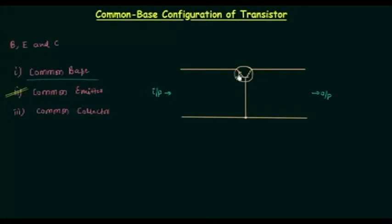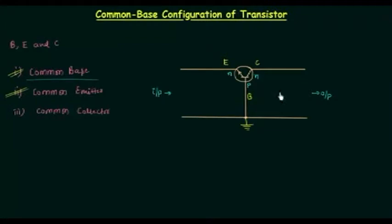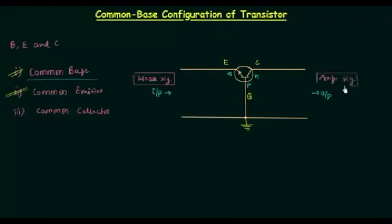Looking at the output side, if you see the direction of emitter current in the transistor symbol, you will find this is an NPN transistor in which this is the emitter, this is the collector, and this is the base. So base is common to the input circuit and the output circuit and it is grounded. In common base configuration, this side is the input side because the weak signal is introduced here and we have the amplified signal on the output side.